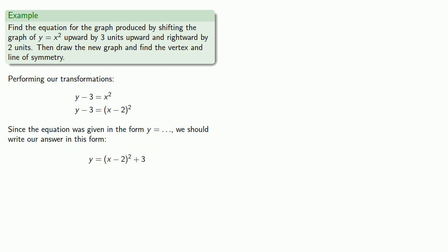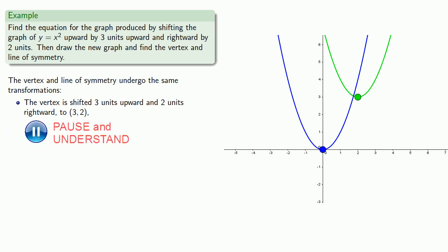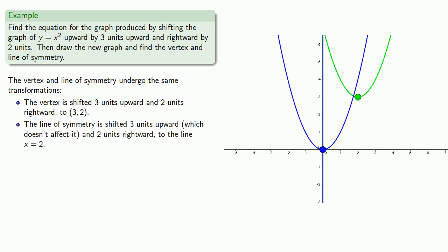To graph, we'll apply these transformations to our parabola. First, we'll shift it 3 units vertically, and then right 2 units. The vertex and the line of symmetry undergo the same transformations. So the vertex is going to be shifted 3 units upward and 2 units rightward to the point (2, 3). The line of symmetry will be shifted 3 units upward, which doesn't affect it because it's a vertical line, and 2 units rightward to the line x equals 2.